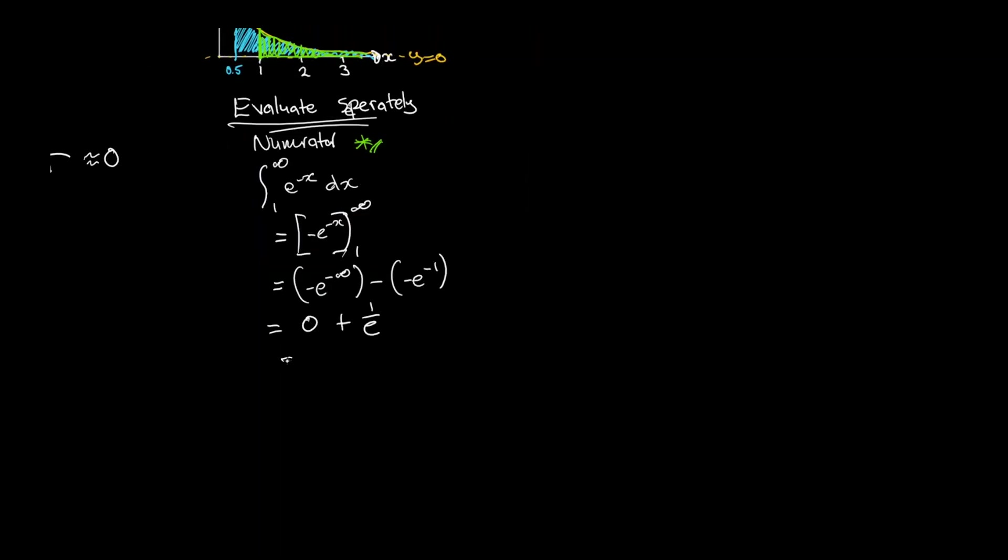For the numerator expression, we just get 1 over e, which again is roughly equal to 0.37. And then for the denominator, which is our blue area, we are going to now evaluate that. We get 1 over root e, which as a decimal is roughly equal to 0.61.